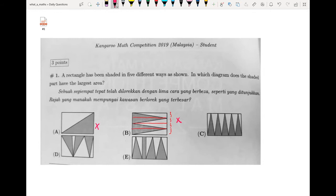For C, similar to what I did just now, I'll break them into separate rectangles. I've broken this rectangle into ten smaller individual rectangles, and the shaded area is exactly half of each separate rectangle.